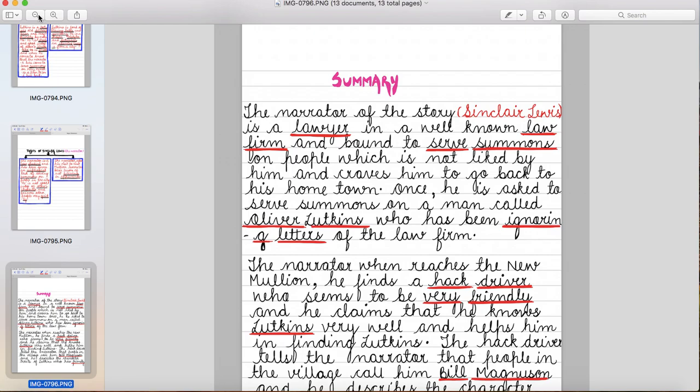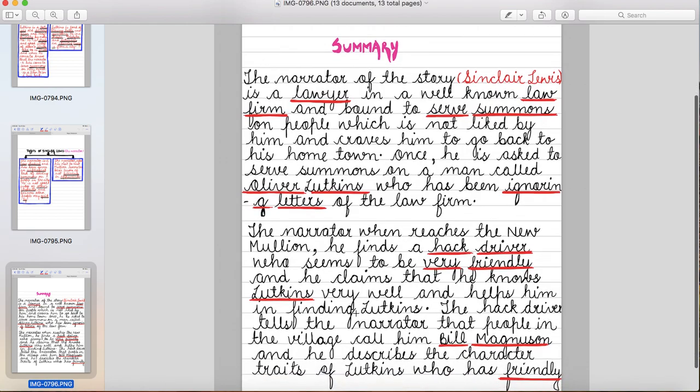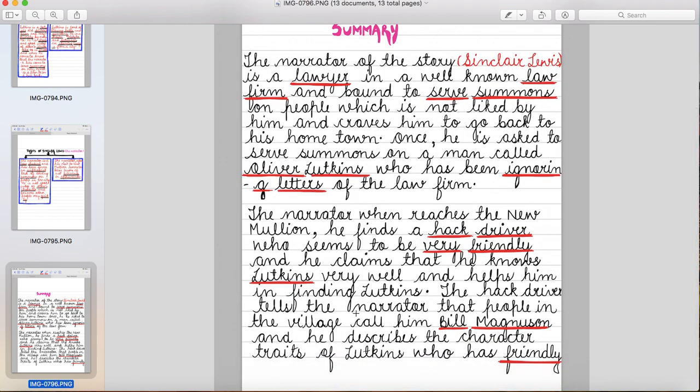Once he is asked to serve summons on a man called Oliver Lutkins who has been ignoring letters of the law firm. Ek din unko yeh kaam diya jata hai ki tum Oliver Lutkins ko court ka order le jao. Why? Because he is ignoring the letters of the law firm.